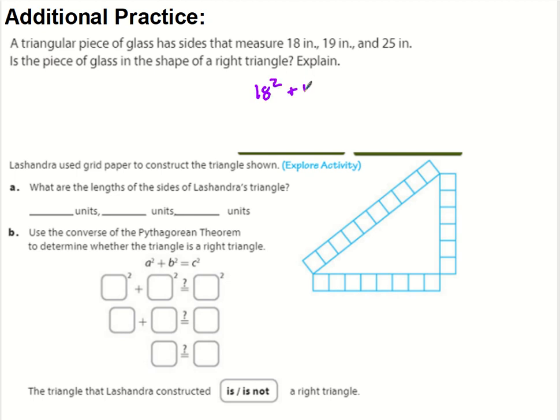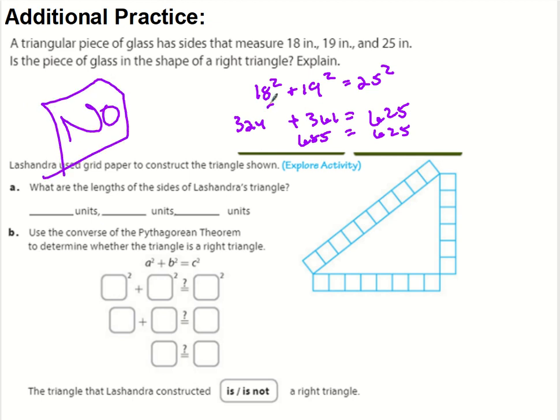So I know it's going to be 18 squared plus 19 squared equals 25 squared. So I got to plug these into a calculator because I don't know what they are. So that's 324 plus 19 squared, 361. And then 25 squared, 625. So now I got to add 324 and 361 to see if they equal 625. I know they don't equal each other by looking at it, but I'm going to add them up. I get 685. So therefore, it does not make the shape of a right triangle. Pythagorean theorem does not work.